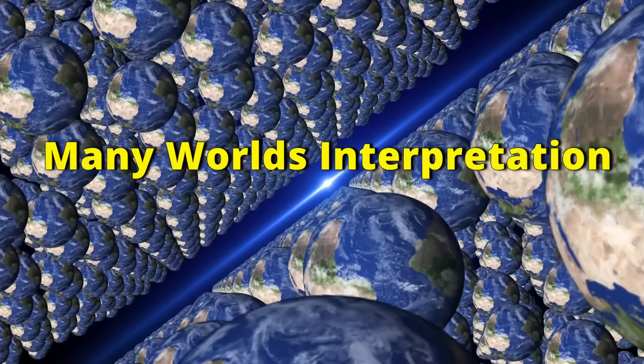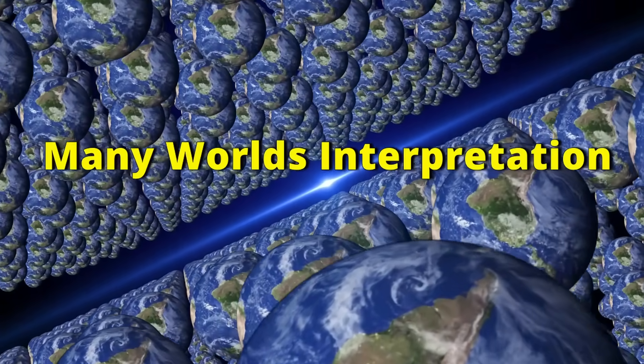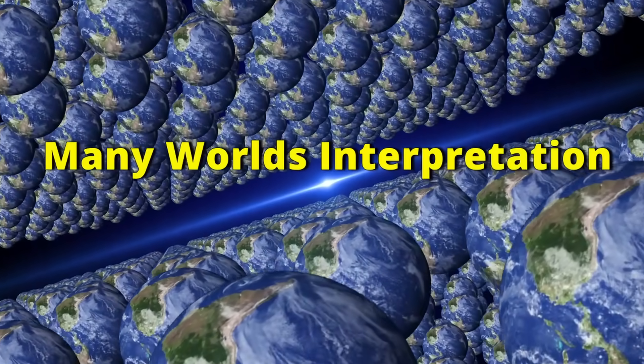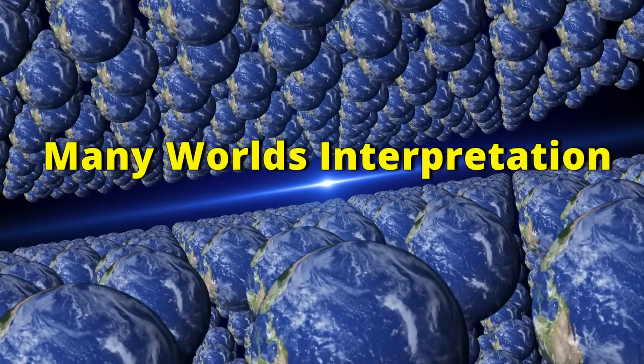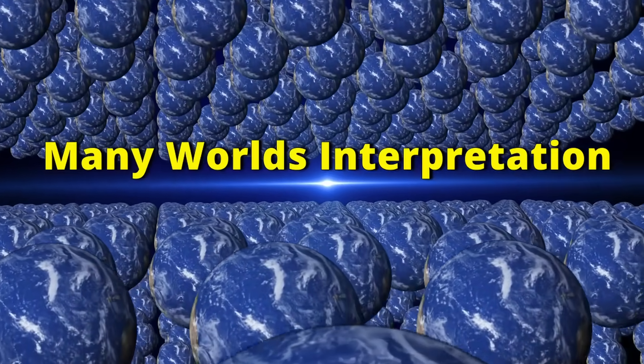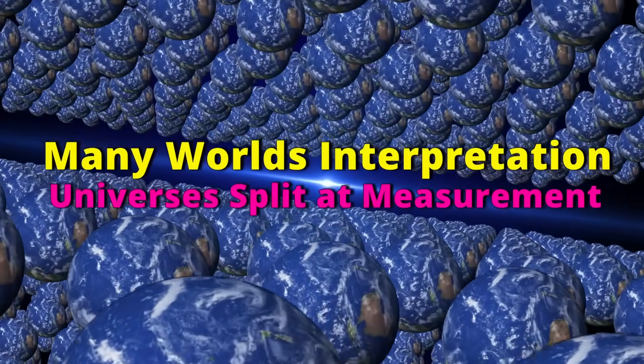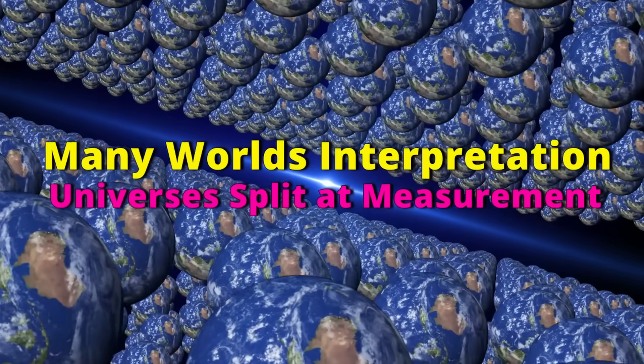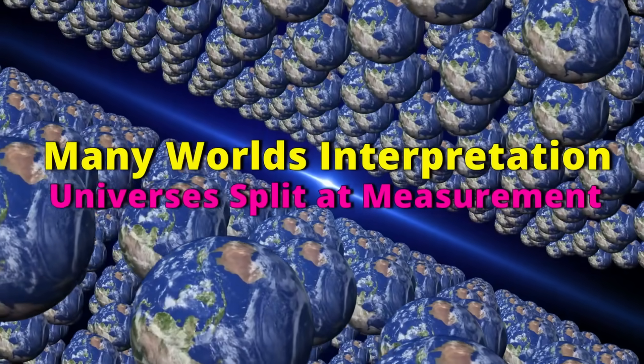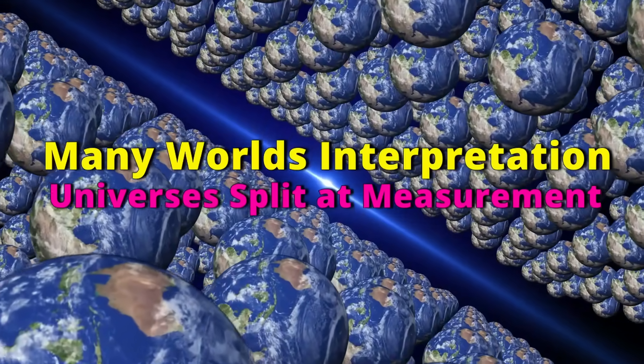The many-worlds interpretation, in a nutshell, says that the quantum wave function never collapses. Whenever measurement has several possible outcomes, the universe splits into several branches, each branch containing one outcome and its corresponding observers.